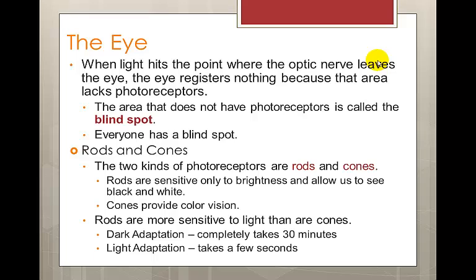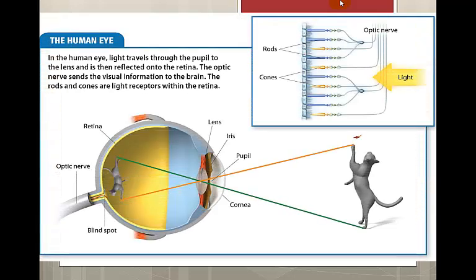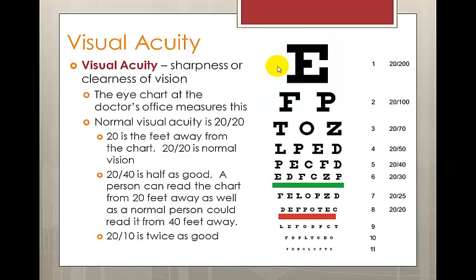There are about six million cones in each eye. The lens bends light and images so that we actually see them upside down on our retina, but our brain is smart enough to flip this image back so that it is correct. Visual acuity is how sharp or clear our vision is, and this is what the eye chart at the doctor's office measures — it's also what they're referring to when they say 20/20. 20/20 is normal vision, with 20 being the number of feet away from the chart. To compare: 20/40 vision is half as good, and 20/10 vision is twice as good.